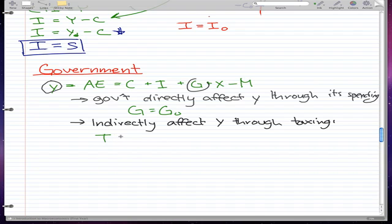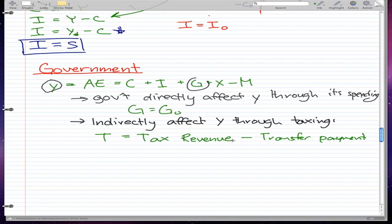T equals our tax revenue - how much the government collects from us as taxes - minus transfer payments. Transfer payments, if I remember correctly, are all the work that the government has to do to actually get the money. The government has to pay people to get the right amount of tax from you. That's what I believe transfer payments are.